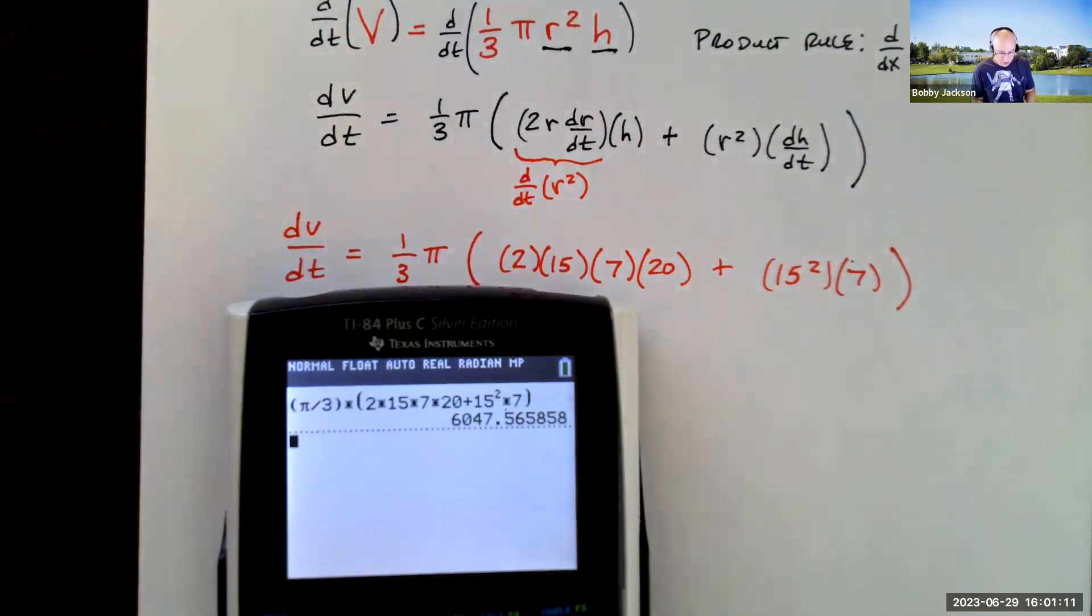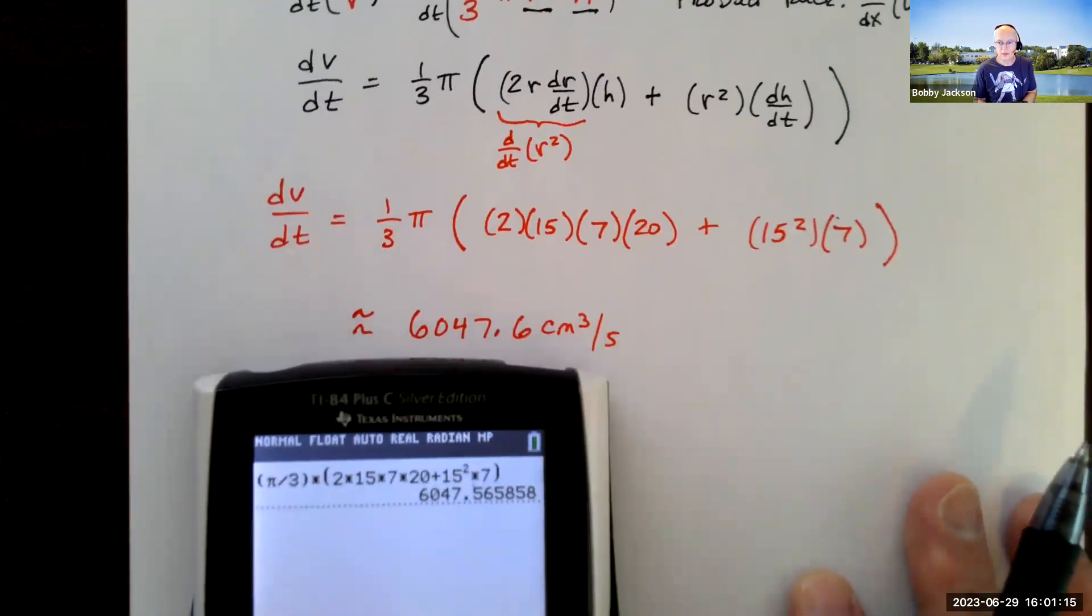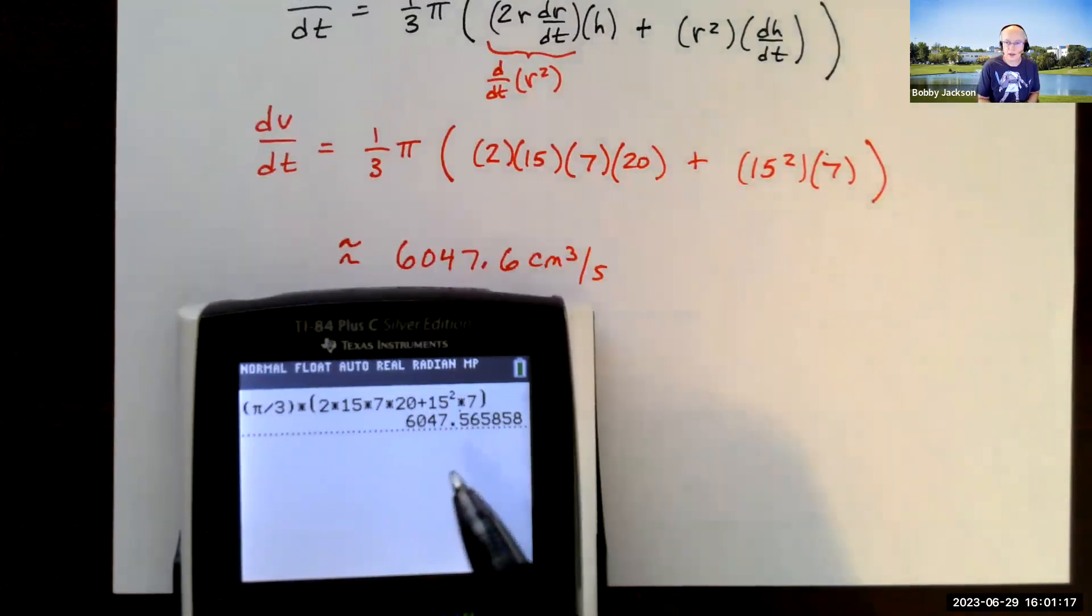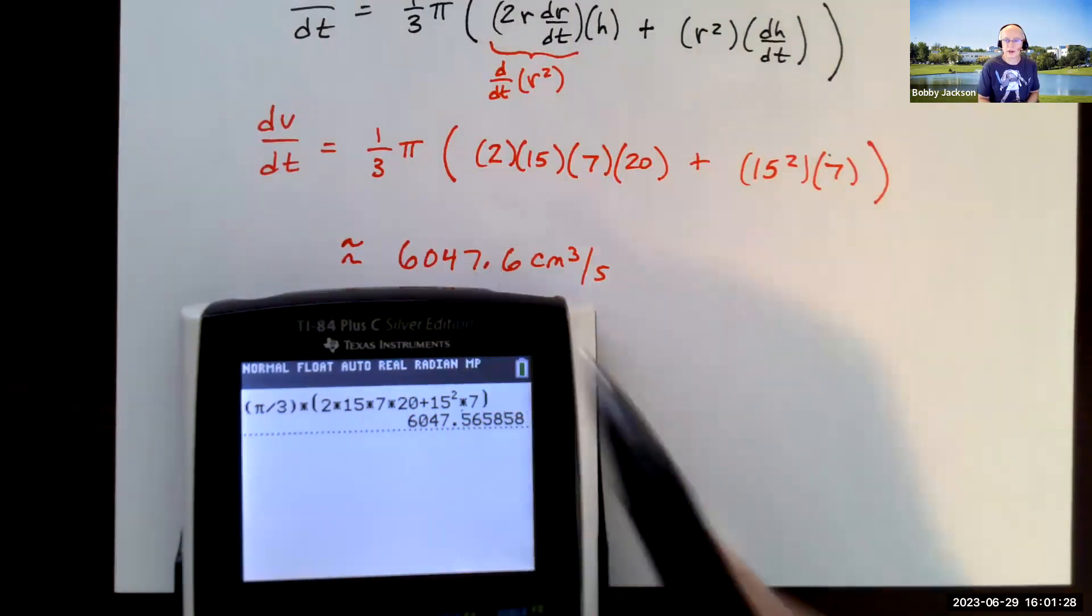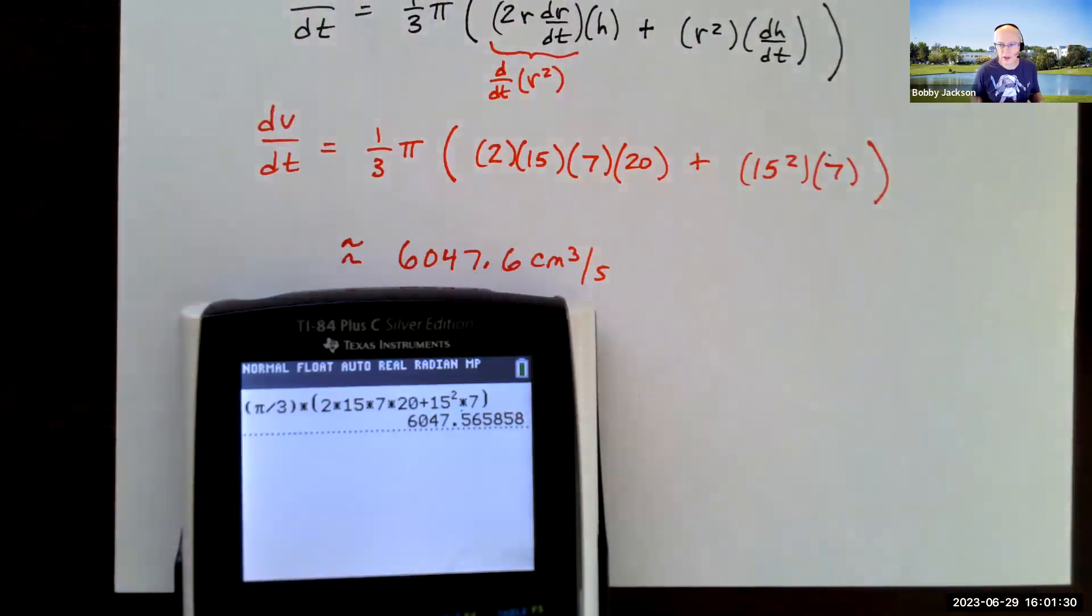So we get that. We're supposed to round it to one decimal place. So be careful. So there's the first decimal place. The next digit is 5 or higher. It's 6. So this will round up that 5 to a 6. And we'll write 6047.6.